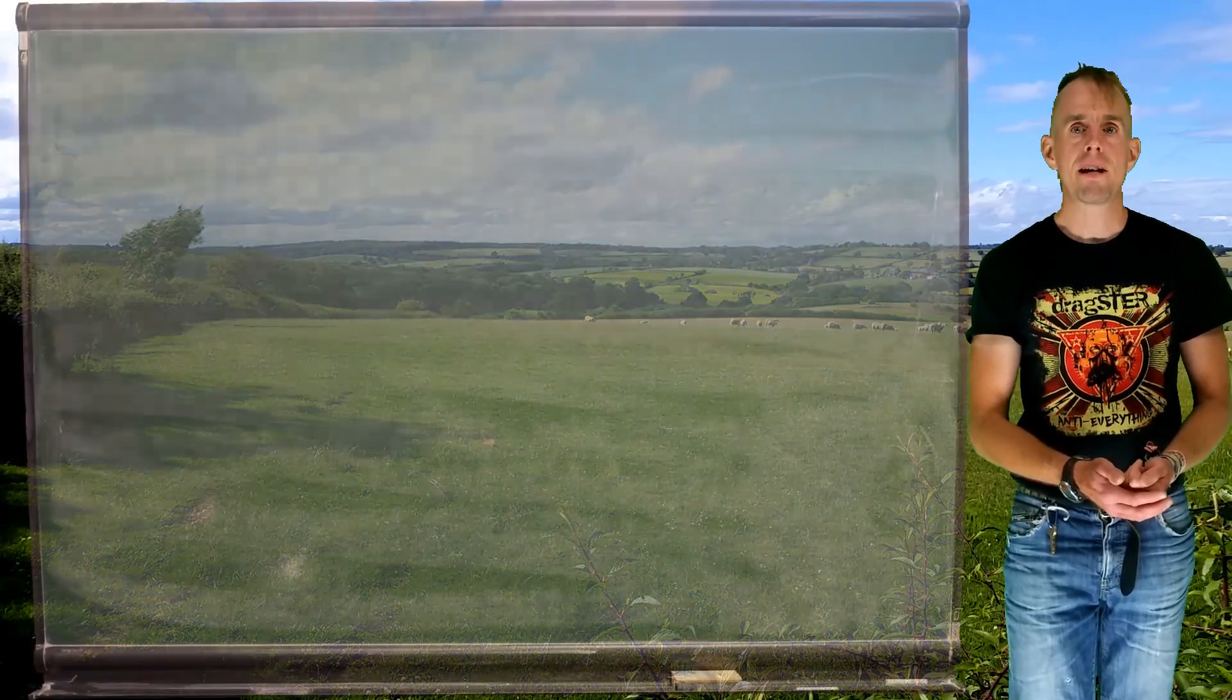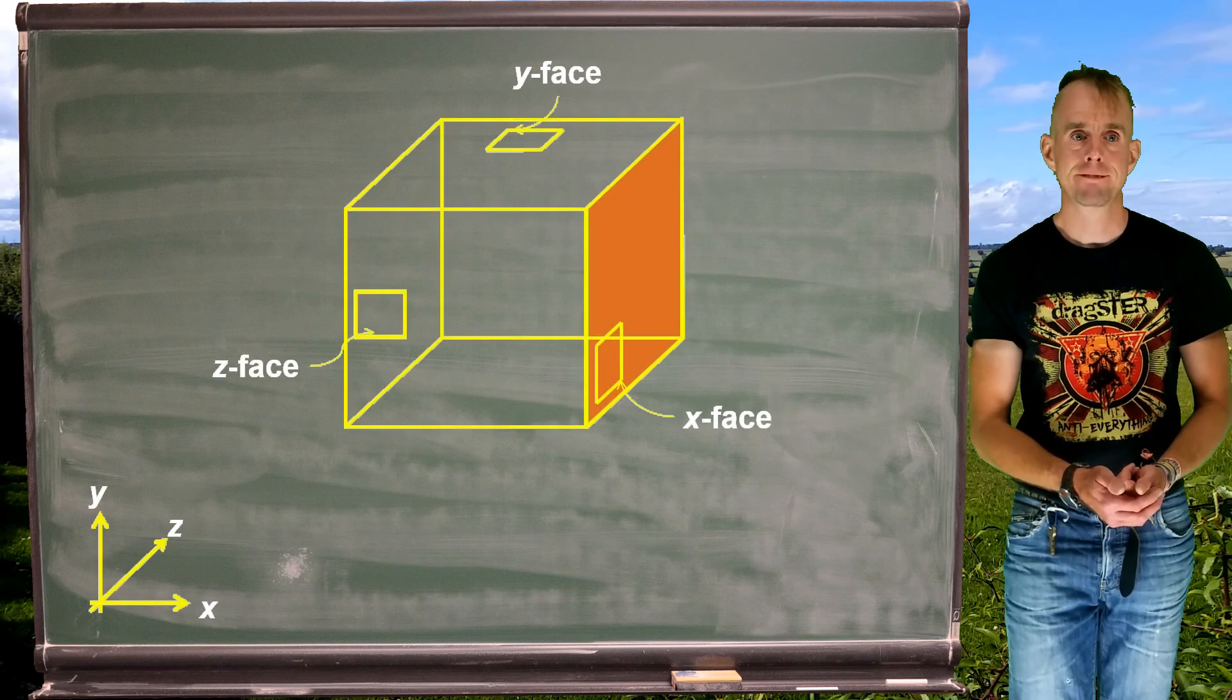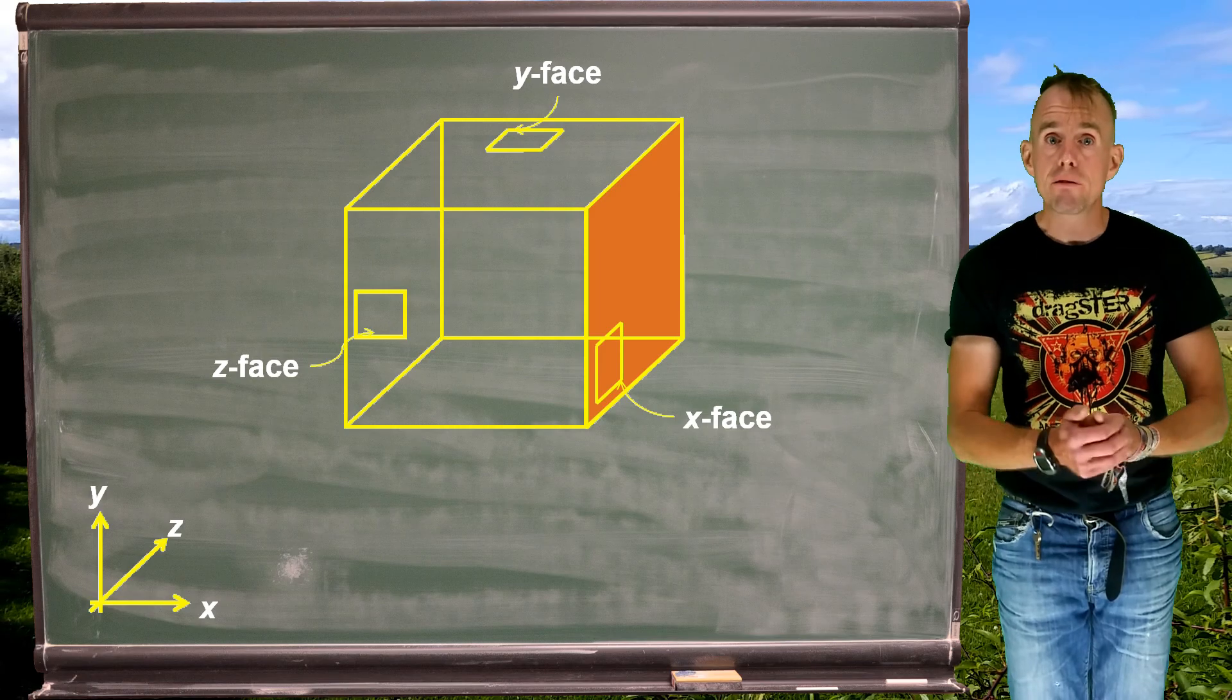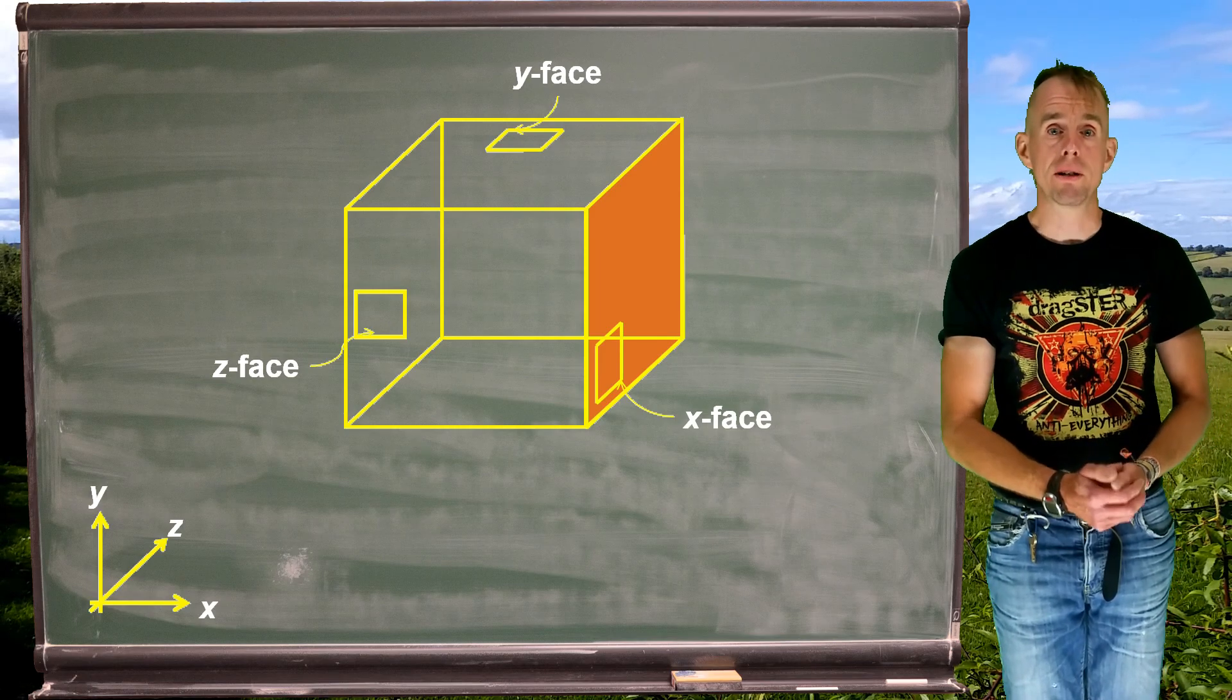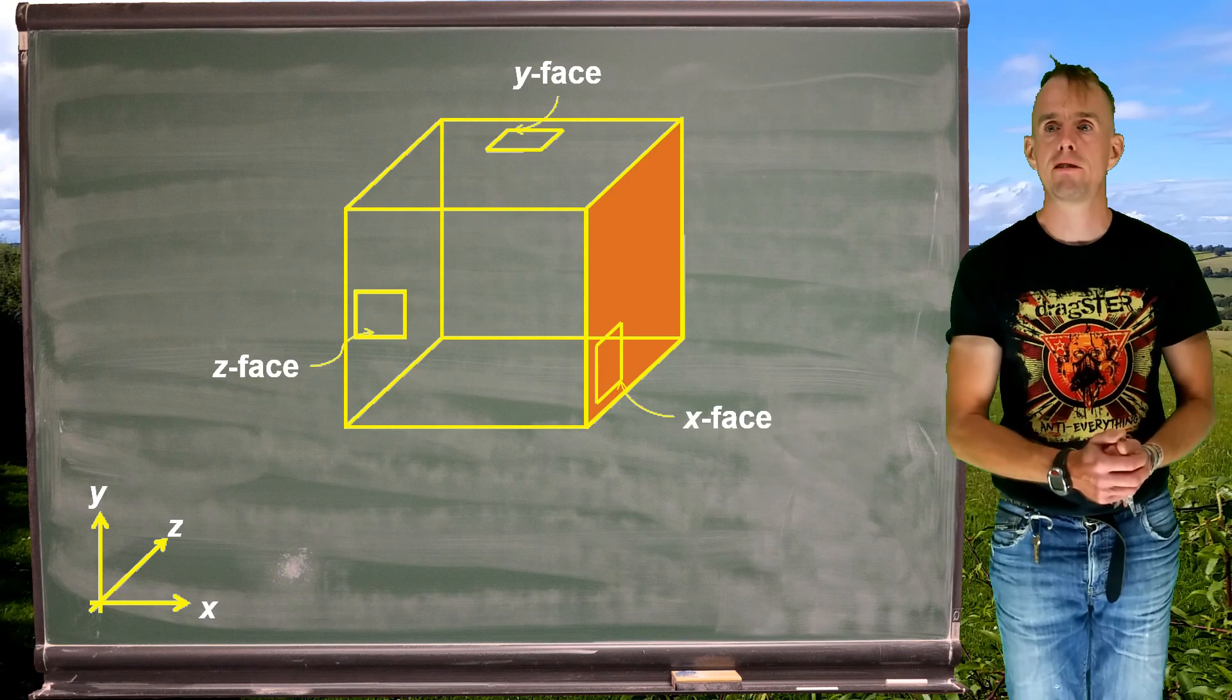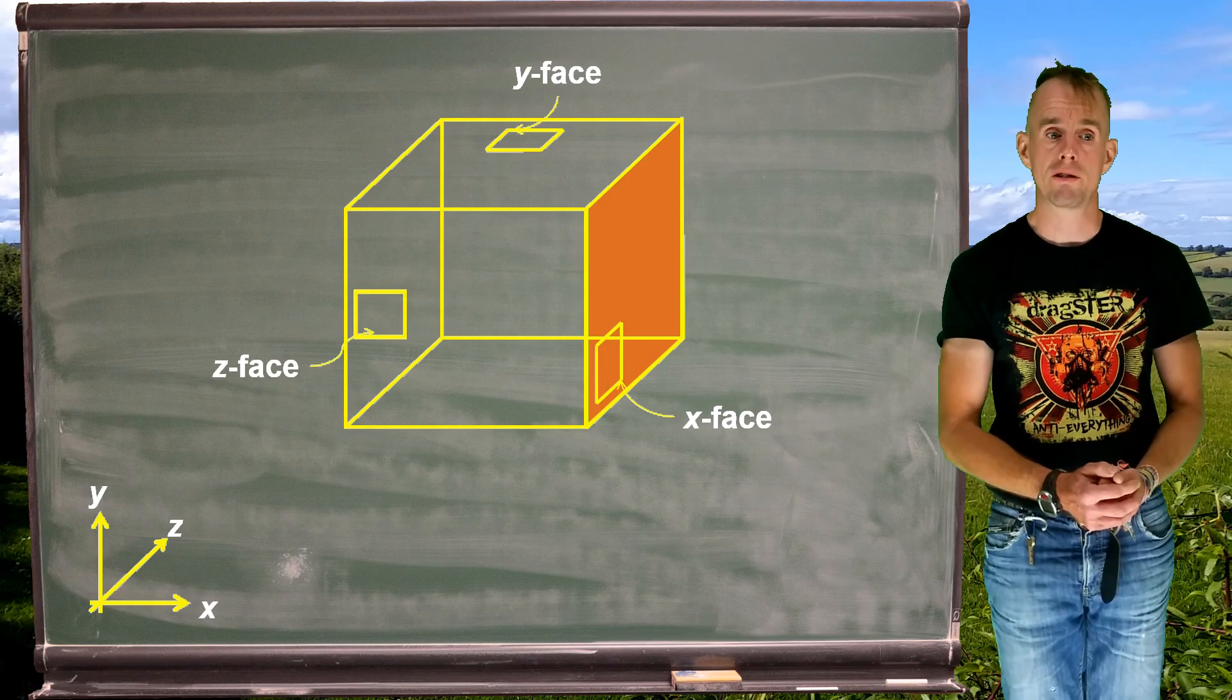So let's have a look now at an elemental cube of fluid. On the blackboard in front of you, you'll see such a thing. Now remember, this elemental cube of fluid is really, really small, and so this infinitesimally small fluid is, in this assumption, governed by a Cartesian coordinate system.